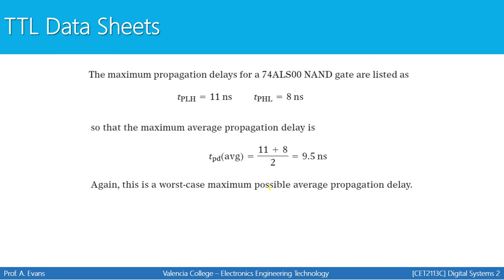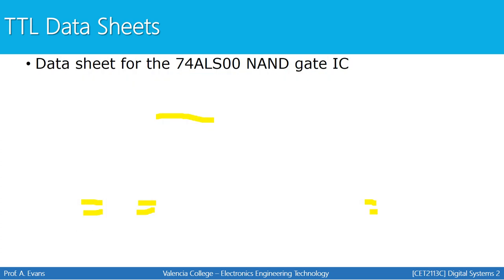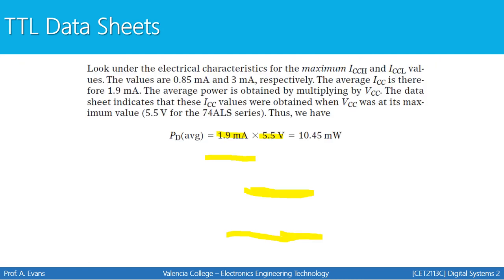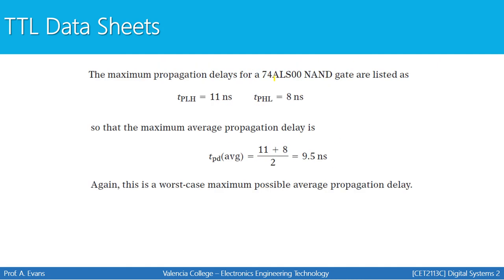For propagation delay, look at the switching characteristics chart for the 74ALS00. Grab the propagation delay times: 11 nanoseconds and 8 nanoseconds. Add those together and divide by two to get your average propagation delay of 9.5 nanoseconds.